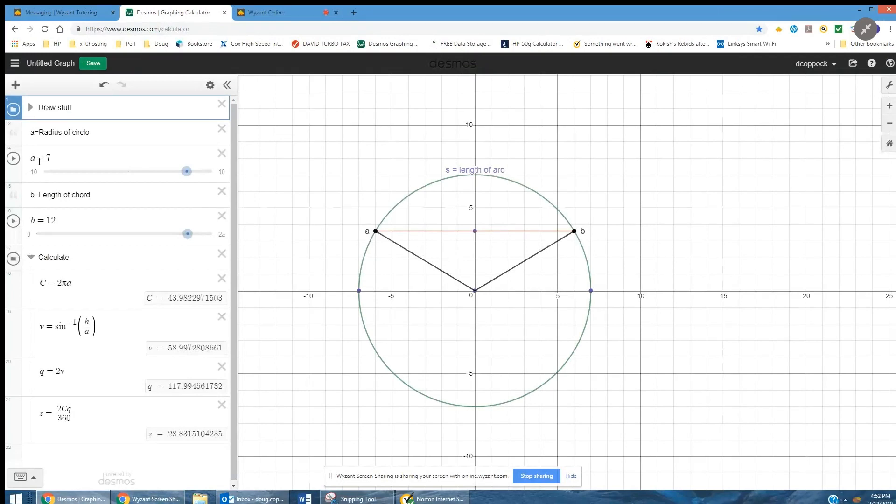The radius of the circle is represented by the letter A, and so A is 7. B is the chord length, which was 12.